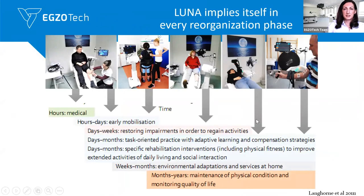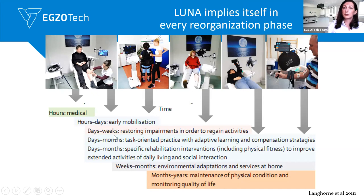Luna EMG is a holistic device that can be applied in every reorganization phase. As Luna is a portable device, you can easily go to the patient's bed and start rehabilitation as fast as possible. Even in the neuro ICU, Luna EMG can be successfully implemented for patients in the very early rehabilitation phase who are immobilized in bed, providing bedside therapy. We can apply passive to active, active-assistive, and even resistive training.